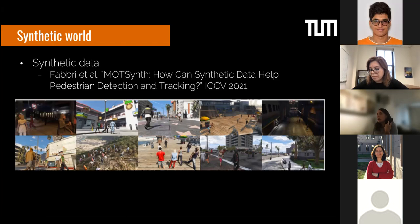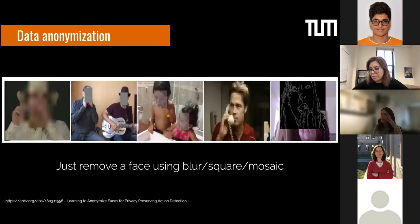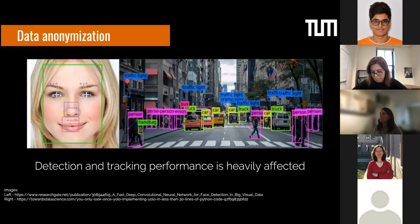Everyone knows there is a domain gap between synthetic and real data — we did need to train a little on real data to achieve good performance on MOT Challenge. A second direction we're pursuing is data anonymization: taking real images and for example blurring faces or putting a square on the face. This is the classic way of performing anonymization.